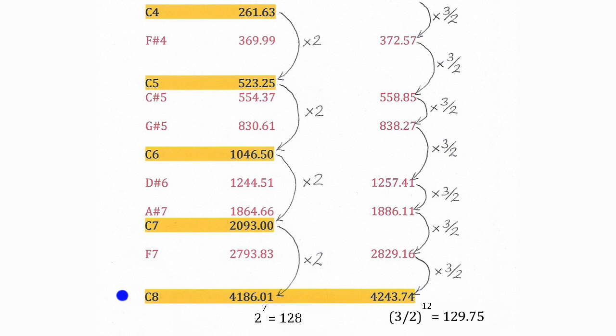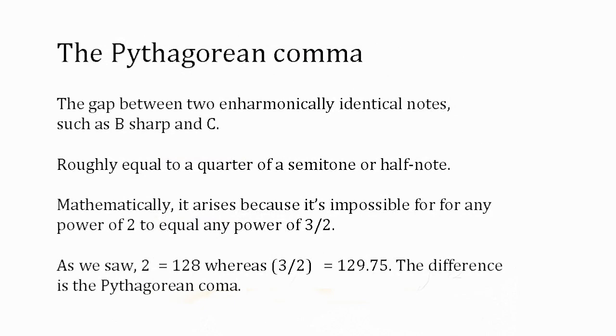In equal temperament, we get back to a C that's perfectly consonant with the starting C, but Pythagorean tuning based on stacked fifths leads us to an end note that's noticeably dissonant. Another way of thinking of this is that in Pythagorean tuning, we end up on a B-sharp that's different in frequency and sound from the C, whereas in equal temperament, we finish on a B-sharp that's enharmonic, in other words, sounds exactly the same as the C.